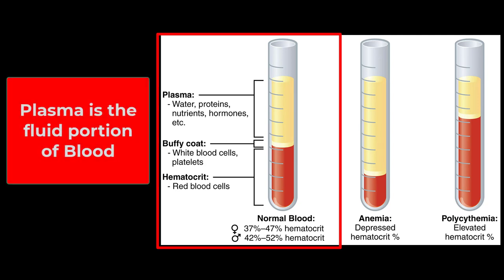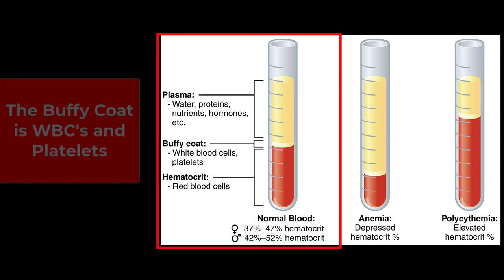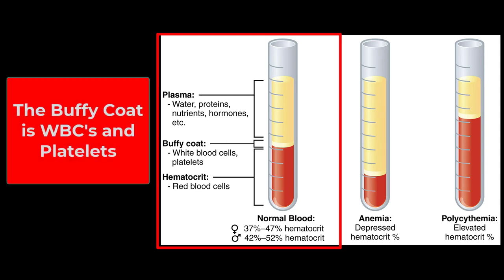Plasma is going to be the fluid portion of blood. It's primarily water, and that's very important because water is the universal solvent — it carries things that can be dissolved in it. About 45% to 65% of your blood is plasma. Then this buffy coat is going to be in the middle. That's where your white blood cells and platelets are, and you can see there's not a lot there compared to red blood cells. Then we have the red blood cells there at the bottom.